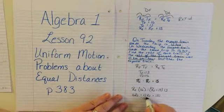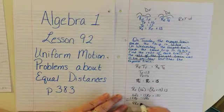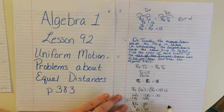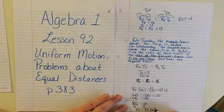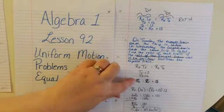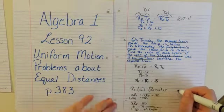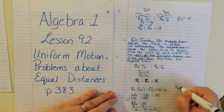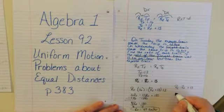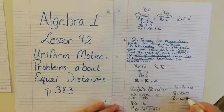Getting all the freight train terms on the same side, we have 4 times the rate of the freight train equals 180. Dividing by 4, the rate of the freight train equals 45 miles per hour. If the rate of the freight train is 45 miles an hour, then the rate of the express train equals 45 plus 15, so the rate of the express is 60 kilometers per hour.